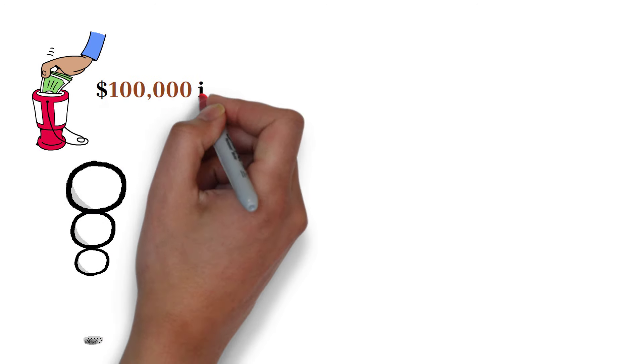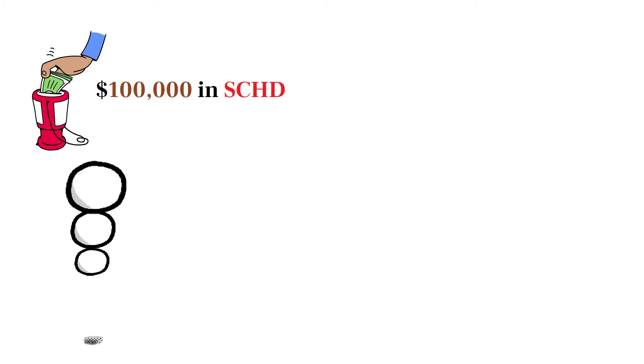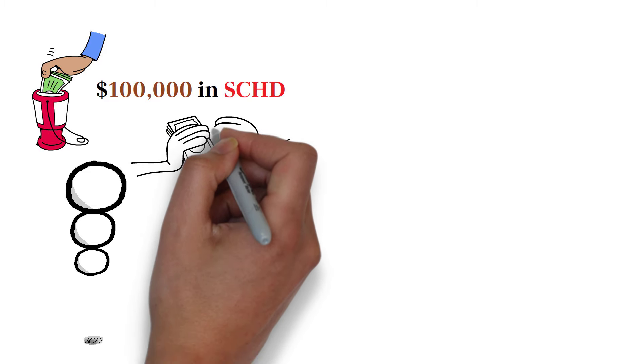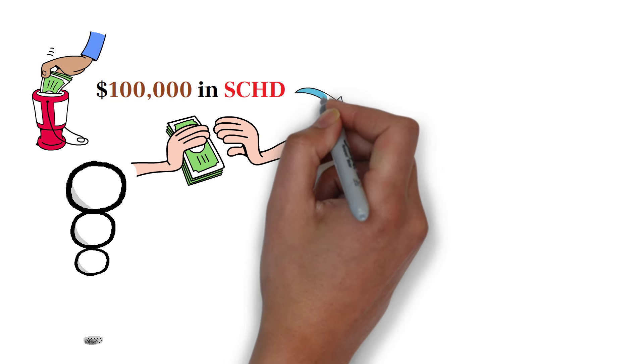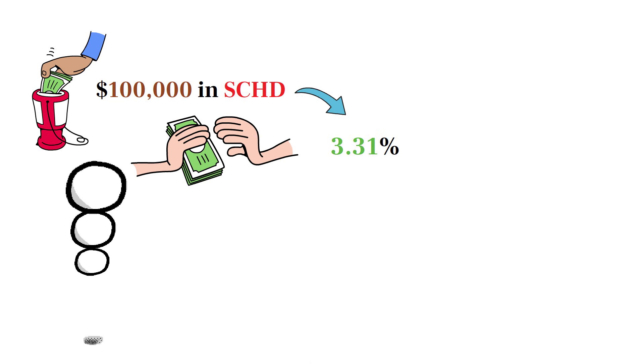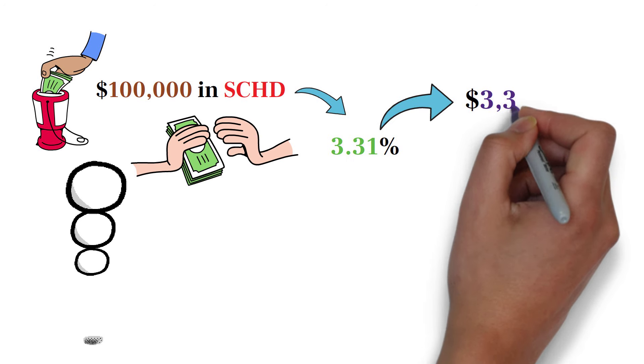Let's bring the dividend snowball effect to life with a practical example to show how powerful this strategy can be. Imagine you start with an initial investment of $100,000 in SCHD. This gives you a solid base to begin generating dividend income. With SCHD's current annual dividend yield of 3.31%, your initial investment would generate approximately $3,310 in dividends in the first year.